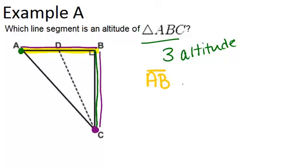So BC is also an altitude of this triangle. Now the third side is side AC, and the altitude from AC would be a line that's perpendicular to AC and goes through the point B. So that is not pictured on this triangle.